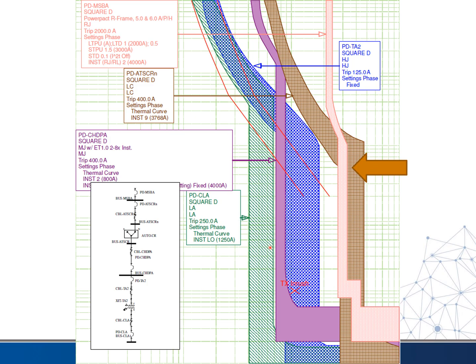The first problem: the main breaker, which is the pink one, should be the furthest to the right, but in this case it is not — this brown one associated with the transfer switch is outside it, so there's a possibility the main breaker would trip before this one. We have a second problem with the purple breaker: if you look at the order, it comes before the blue and the green, so it should actually be outside of those. We have an overlap problem with both our main breaker and the CHDPA breaker, and we need to move them to the right if possible.